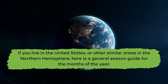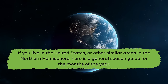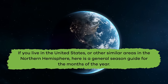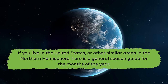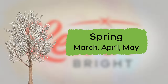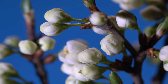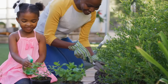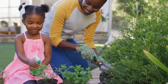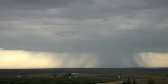If you live in the United States or other similar areas in the northern hemisphere, here is a general season guide for the months of the year. Spring: March, April, and May. You might notice that plants start to bud and flower during the springtime. This season is also a great time to plant a garden, because there is usually a lot of rainfall.